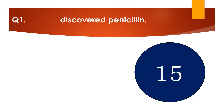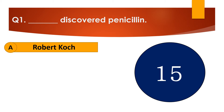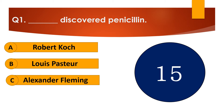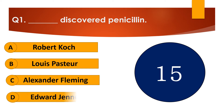Question number 1. Dash discovered penicillin. The options are: A. Robert Koch, B. Laveran, C. Alexander Fleming, or D. Edward Jenner.